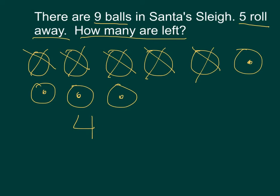What is my unit or my label? What were we talking about? Back in the story, what word do I see over and over? Nine balls, nine balls. So my label is balls. I have a picture. I have an answer with a label. Now I need my number sentence. In subtraction, the largest number always comes first — that would be the nine balls.